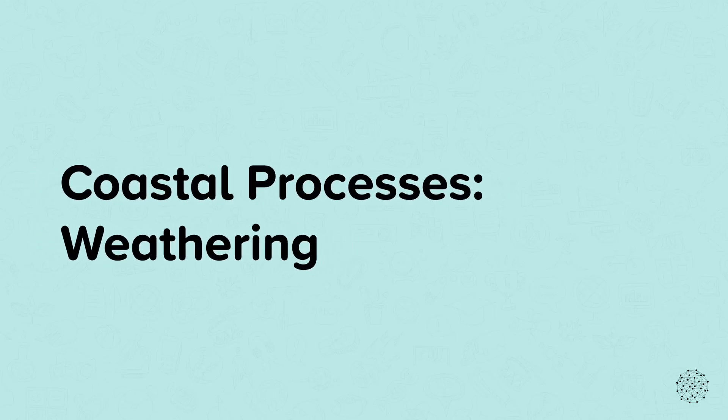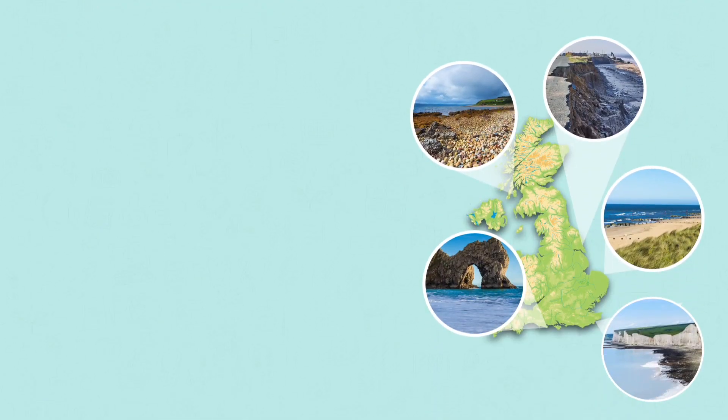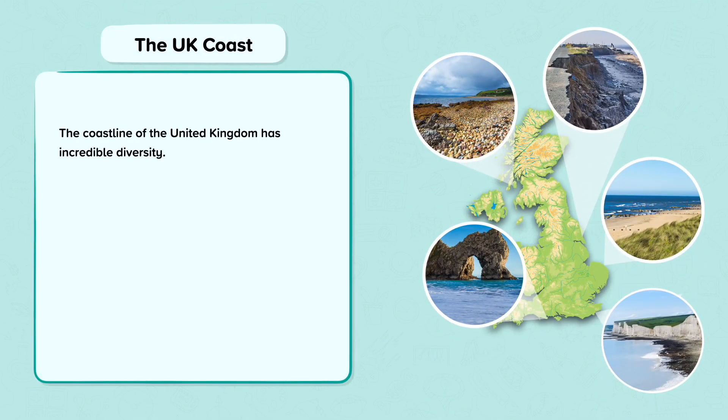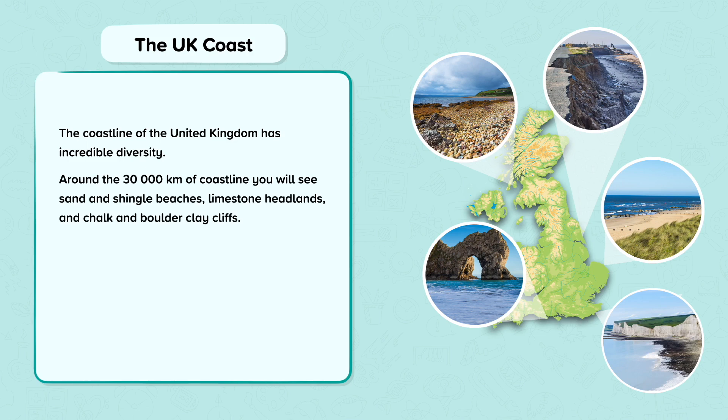Coastal Processes Weathering. The UK coast. The coastline of the United Kingdom has incredible diversity. Around the 30,000 km of coastline, you will see sand and shingle beaches, limestone headlands, and chalk and boulder clay cliffs.